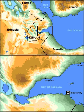Passenger transport on the Gulf includes a number of ferry lines which connect the following ports: Djibouti city, Tadjura, and Obik.